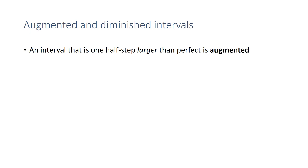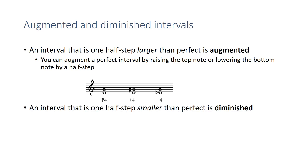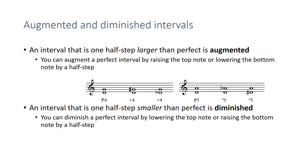What happens to perfect intervals when they're not perfect anymore? If you take a perfect interval and make it one half step larger, it becomes augmented — you raise the top note or lower the bottom note by a half step. I also call this raising the roof or lowering the floor. If you take a perfect interval and make it a half step smaller, then it is diminished — you lower the top note or raise the bottom note. In either case, it becomes a diminished fifth.